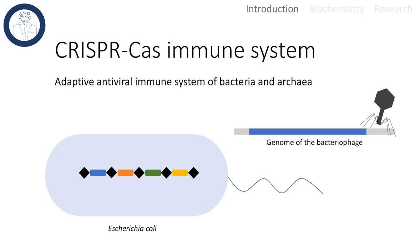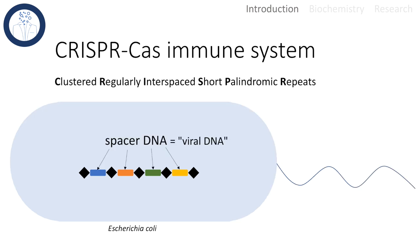It is quite spectacular how scientists discovered this. Scientists found out that there were viral sequences inside the bacterial genome. You can see the similarity in the blue sequence. CRISPR is short for clustered regularly interspaced short palindromic repeats, and that describes the CRISPR array.